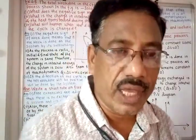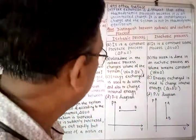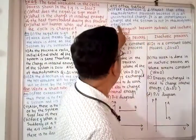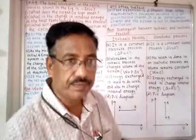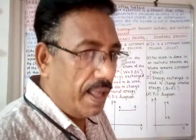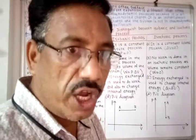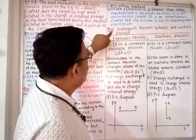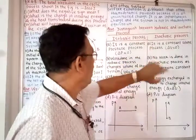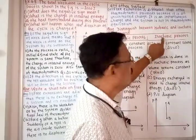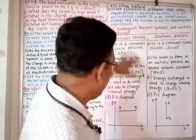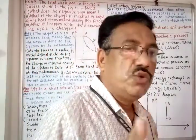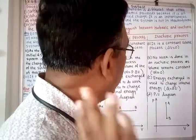The system is not in thermodynamic equilibrium; temperature, volume, and pressure all change rapidly based on the environment. In normal thermodynamic processes the system changes slowly and remains in equilibrium, but free expansion is different because it is uncontrolled.